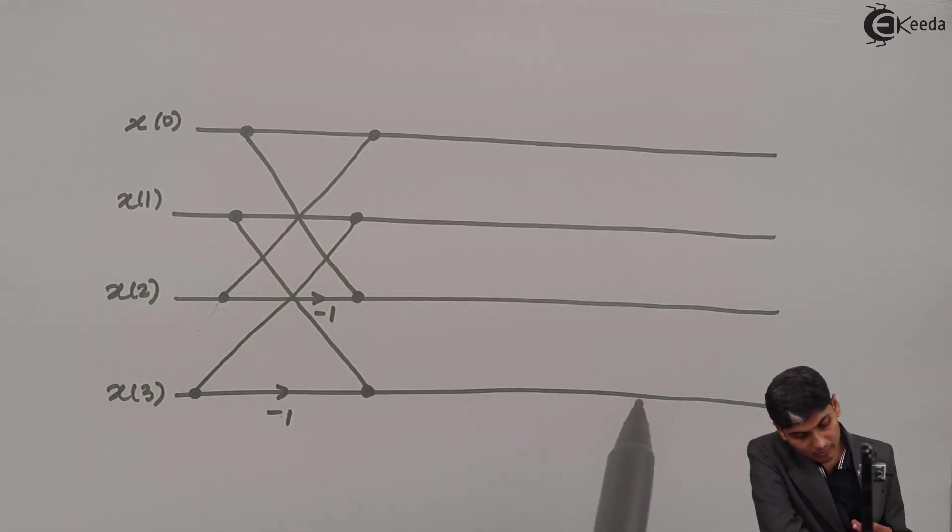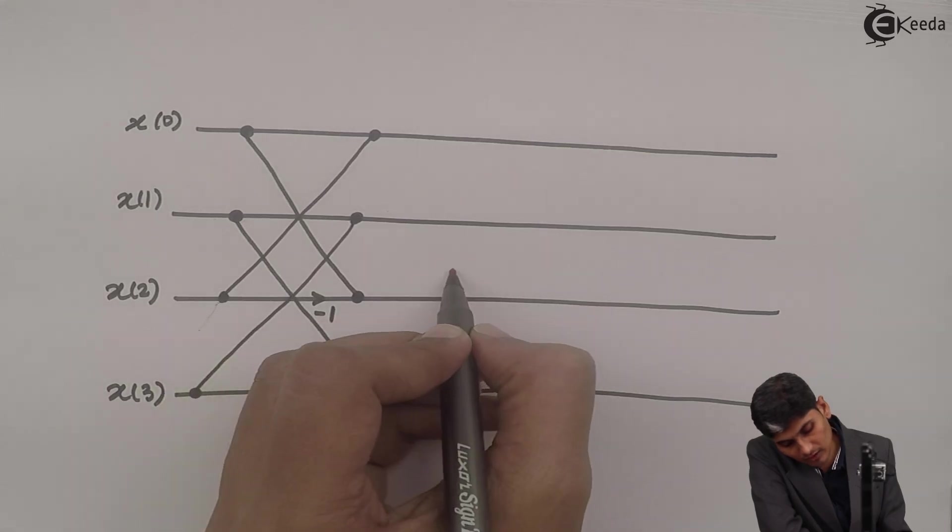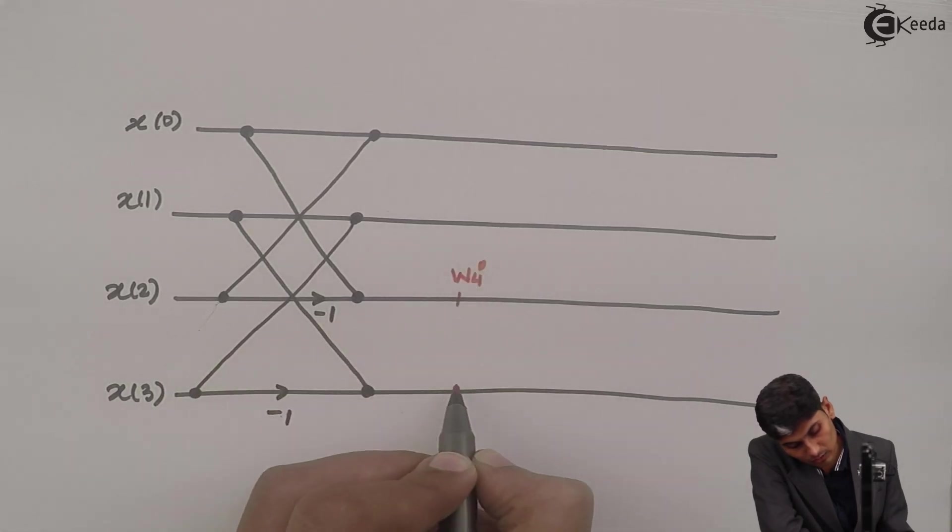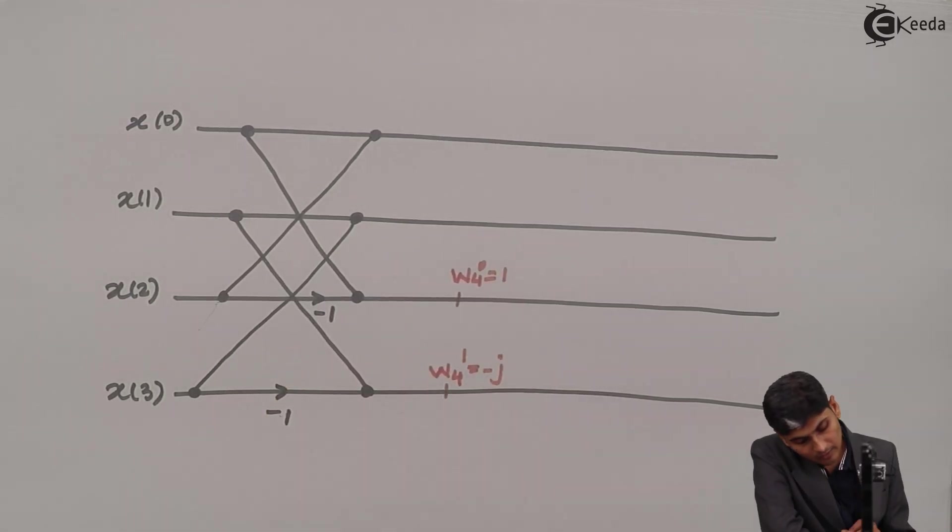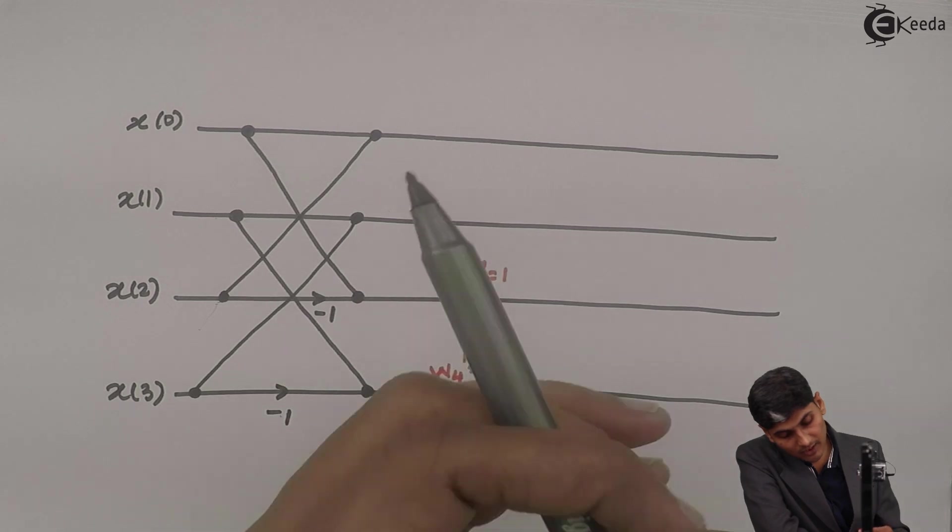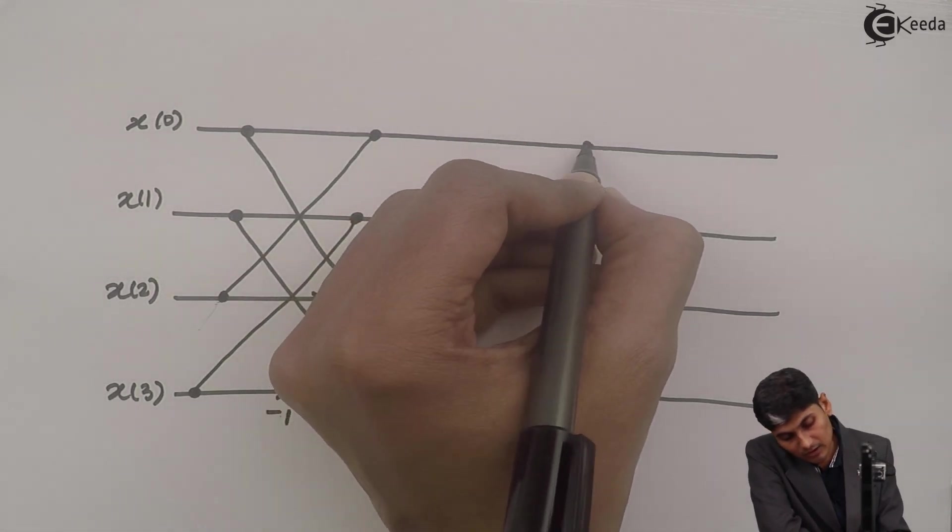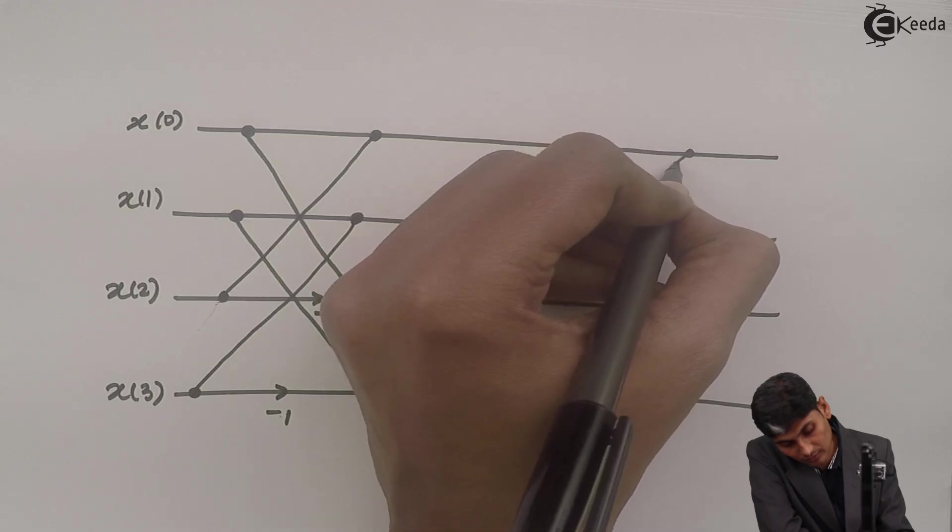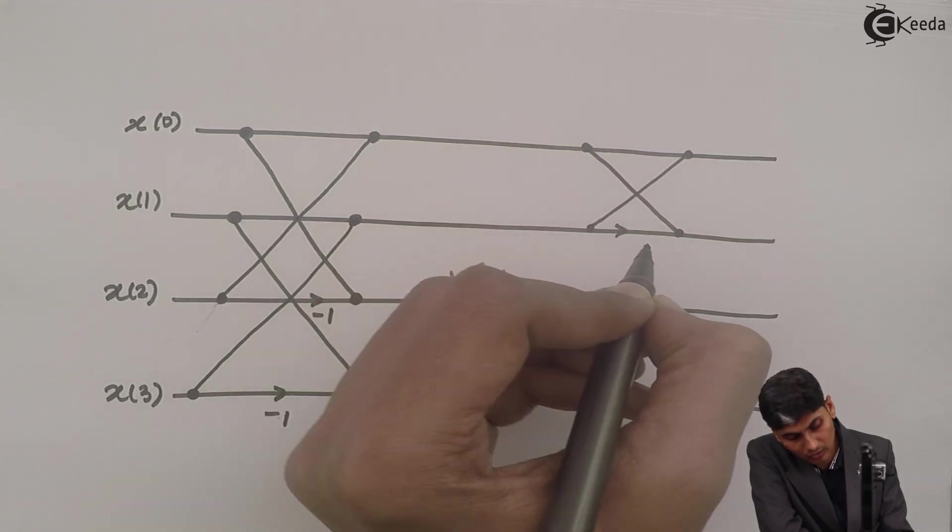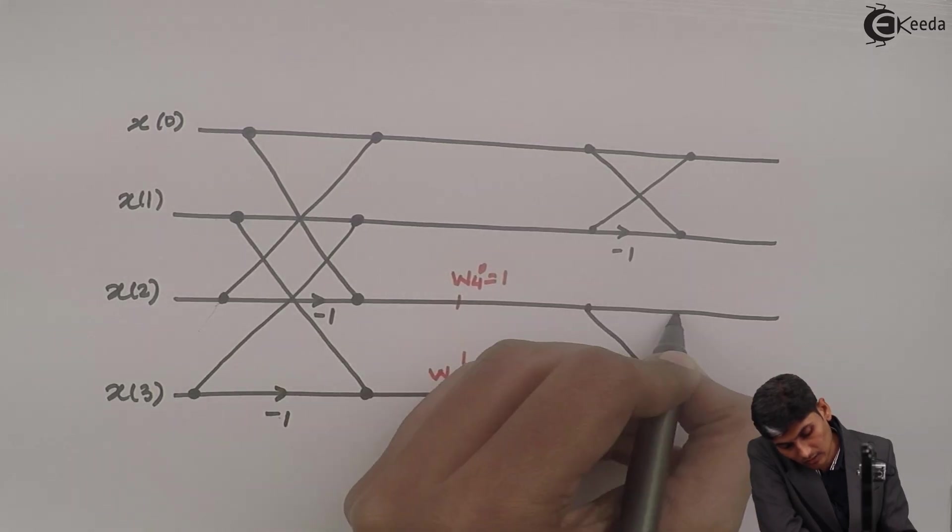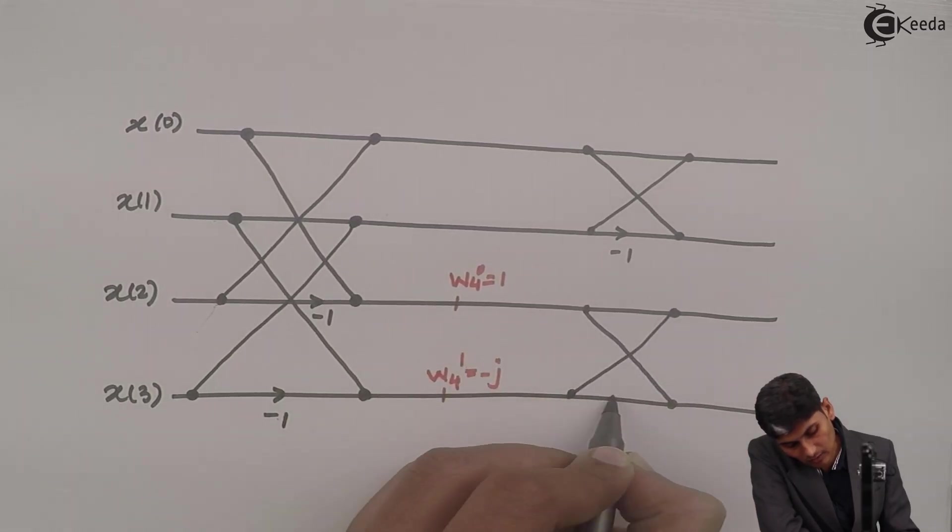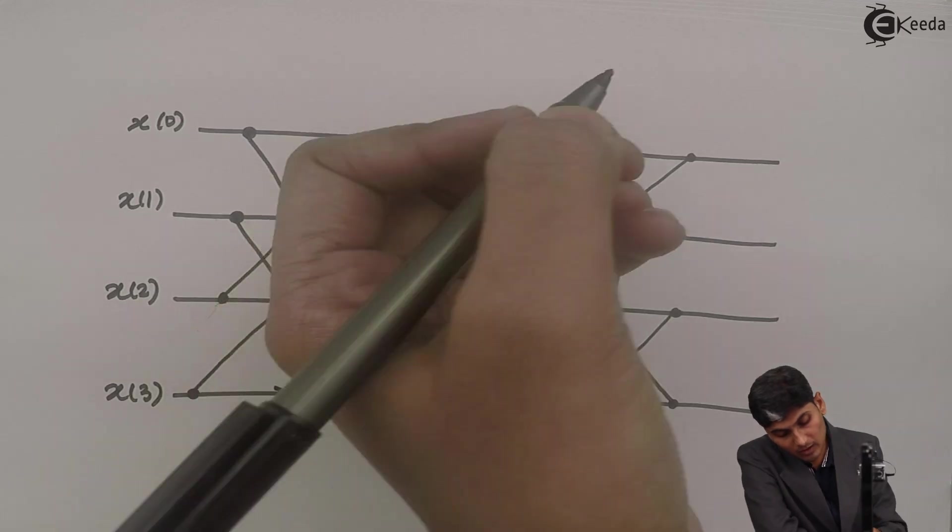Then we have a multiplying factor here of W4 raised to 0 and here I have W4 raised to 1 which is equal to 1 and which is equal to minus j. And finally, I have here as one more crisscross with minus 1 and another crisscross with minus 1 again.